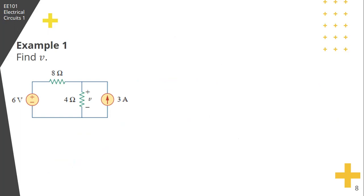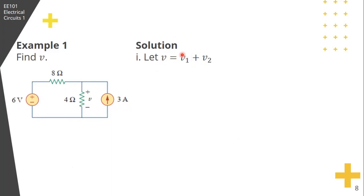Let's try to solve this problem. Find the voltage V. Since there are two sources — a voltage source and a current source — we let V be equal to V1 plus V2, where V1 is the contribution due to the 6-volt voltage source, and V2 is the contribution due to the 3-ampere current source.